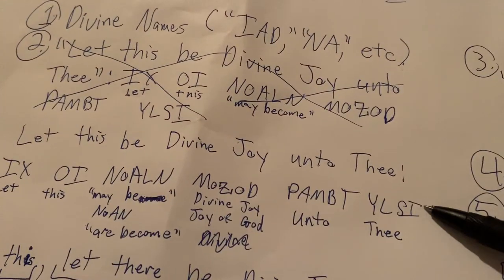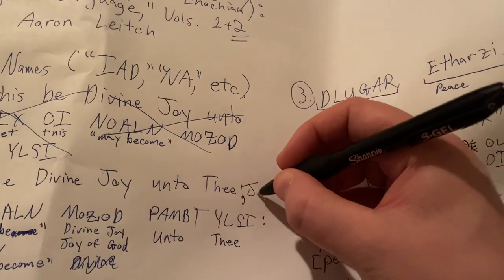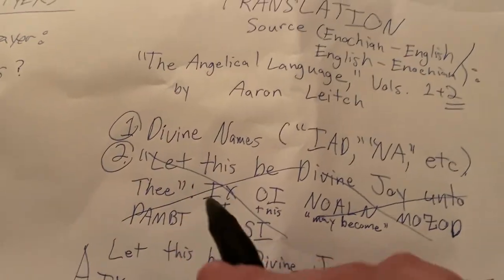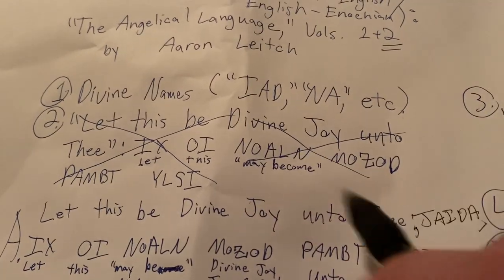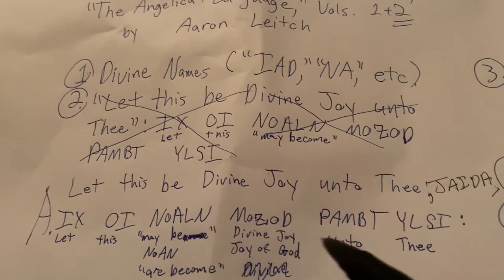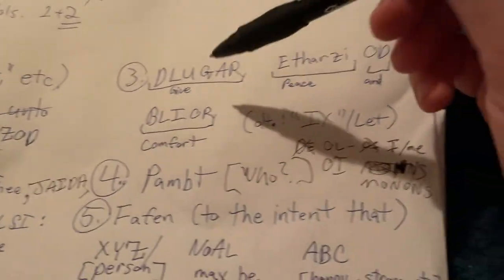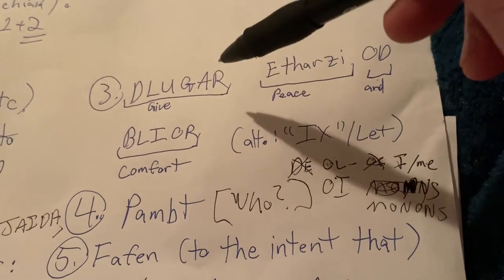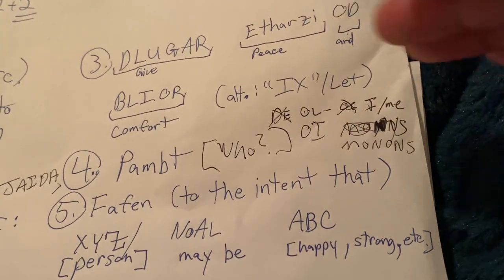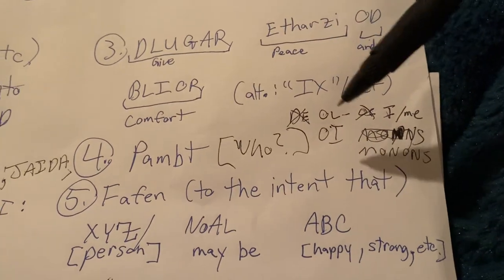So putting it together, starting from the address: 'Jida' — highest God — then 'ix oi noan mozod pam tilsai' — let this may be divine joy unto thee — then 'de lugar etharzai od blaior pam toi monans' — give peace and comfort unto this heart. It's implied because you know what you're saying — your spirit is oriented unto you. You're saying: please give peace and comfort unto myself.